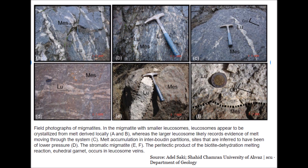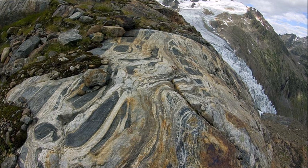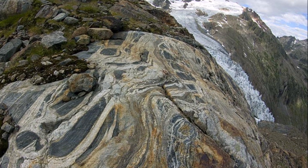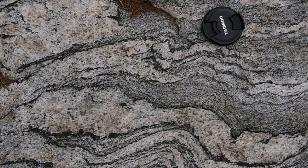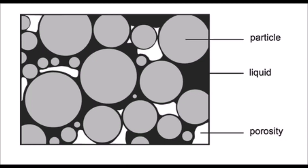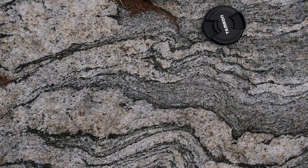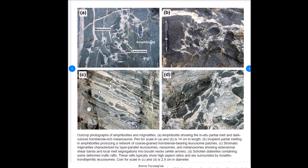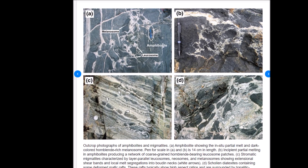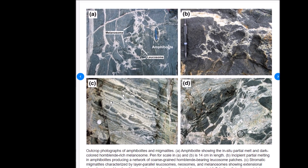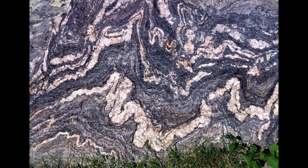Formation of shear zones decreases the overall viscosity of migmatite, leading to more strain partitioning into the melt. As strain rate increases, the melt becomes non-Newtonian and decreases its viscosity — shear thinning. Melt is removed from rock between veins, producing a positive feedback resulting in pulses of melt expulsion. Field evidence and theoretical studies indicate that shear channeling must play an important role in segregating bodies of granitic magma.